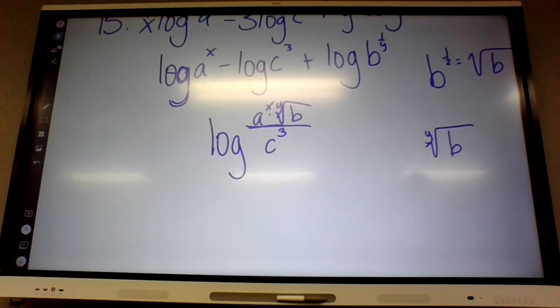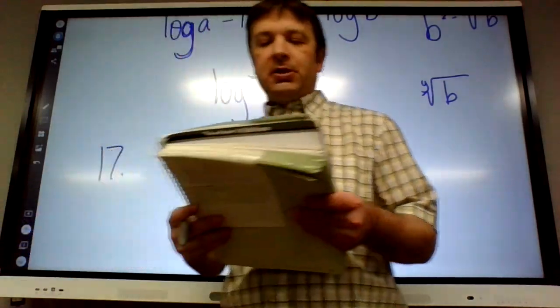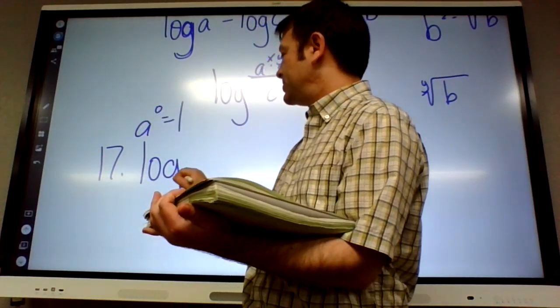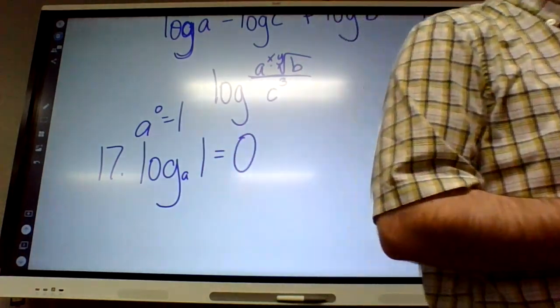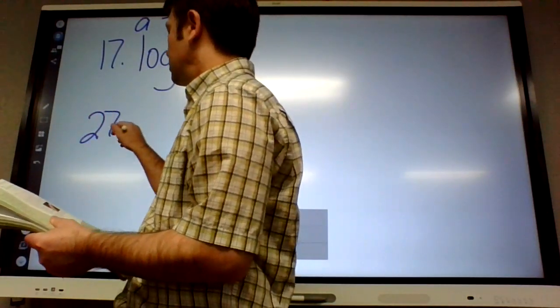17, 18 are kind of like the end of Friday's assignment. Convert to exponent - convert each property to log form. So we just got to write it as a logarithm. That's kind of like number one, actually, on Friday. So number 17, log base a of 1 equals 0. We're just turning it into a log like we did on Friday. And then what did I write up there? 27 to 32. We don't have to graph it.